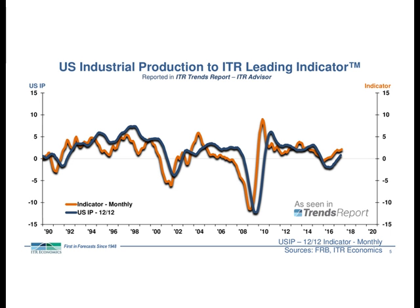This next chart compares U.S. industrial production to the ITR proprietary leading indicator — though the slide isn't aligned correctly, so bear with me. The ITR leading indicator leads the industrial sector by about six to nine months. In the last quarter, we've seen three months of sustained rise — another positive indicator from actual economic data suggesting growth through at least the first quarter of 2018.